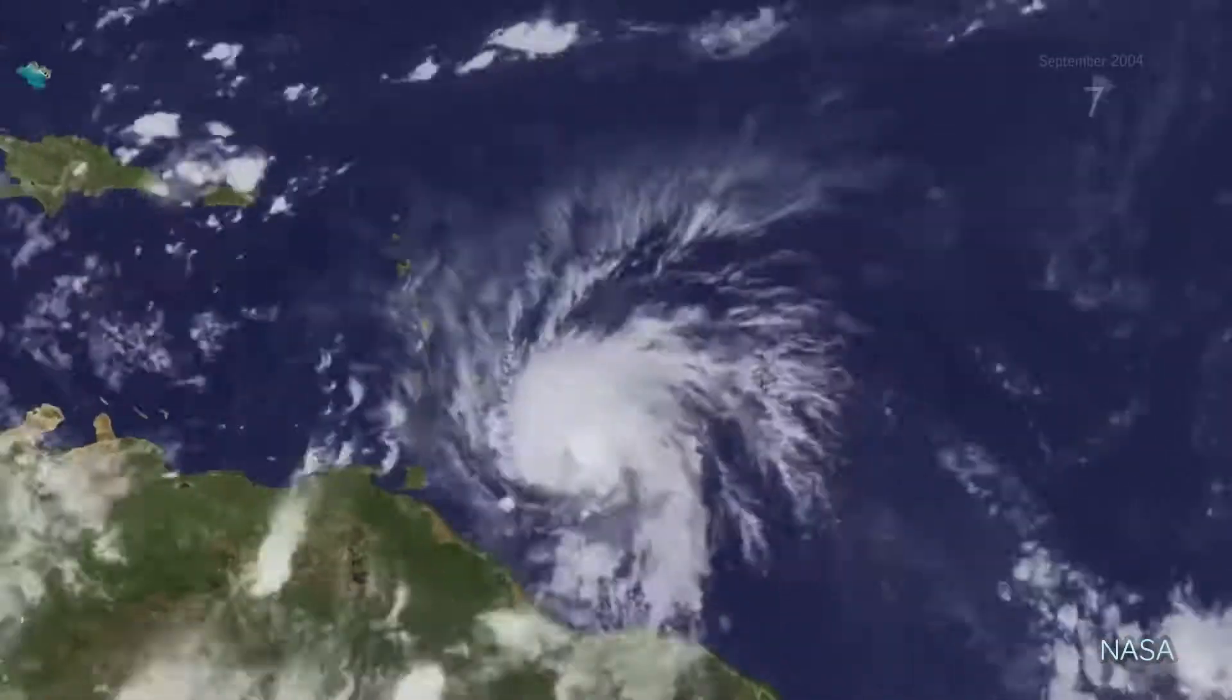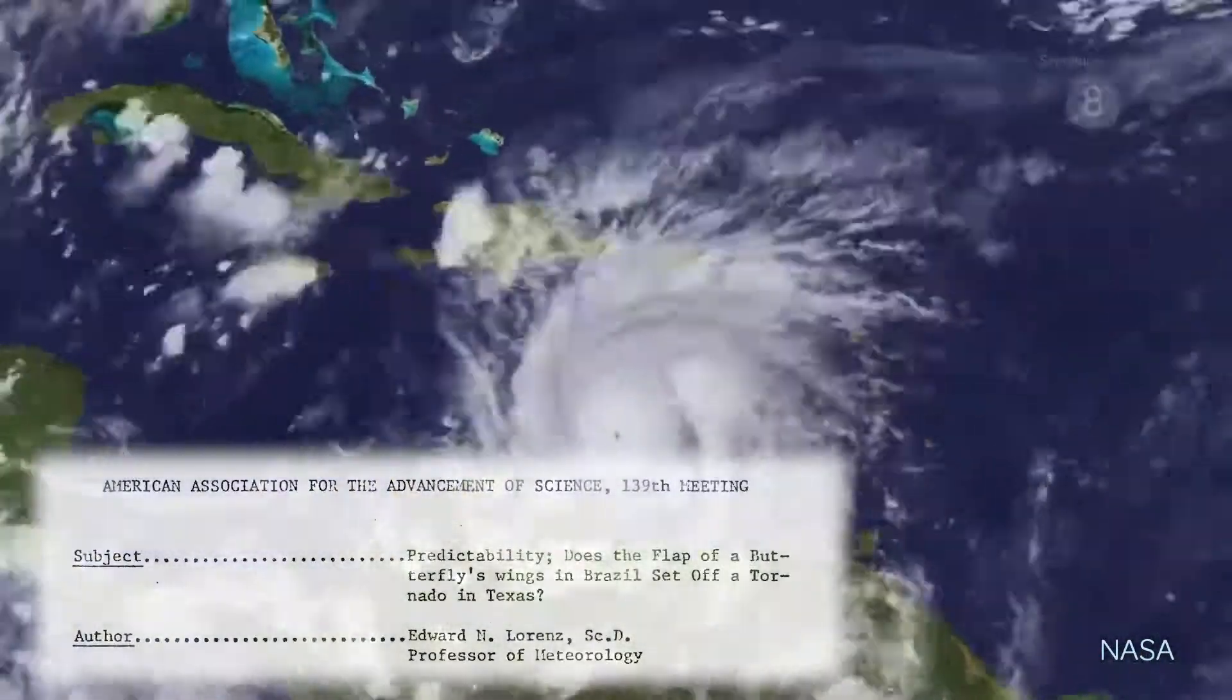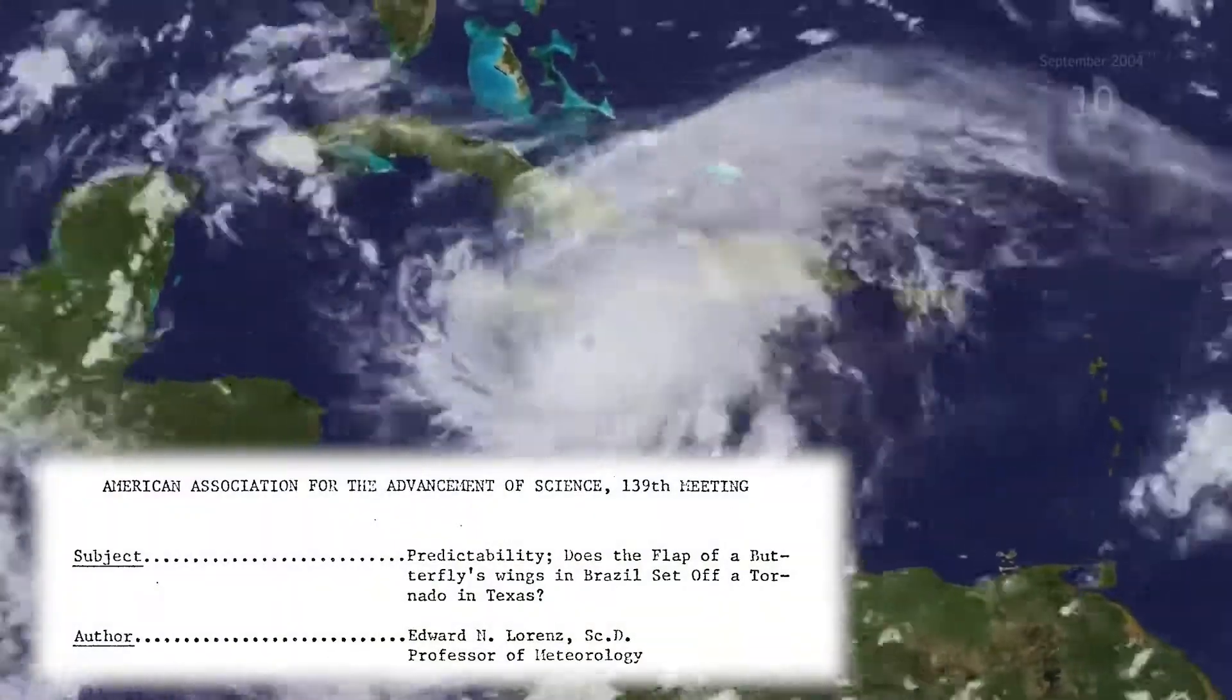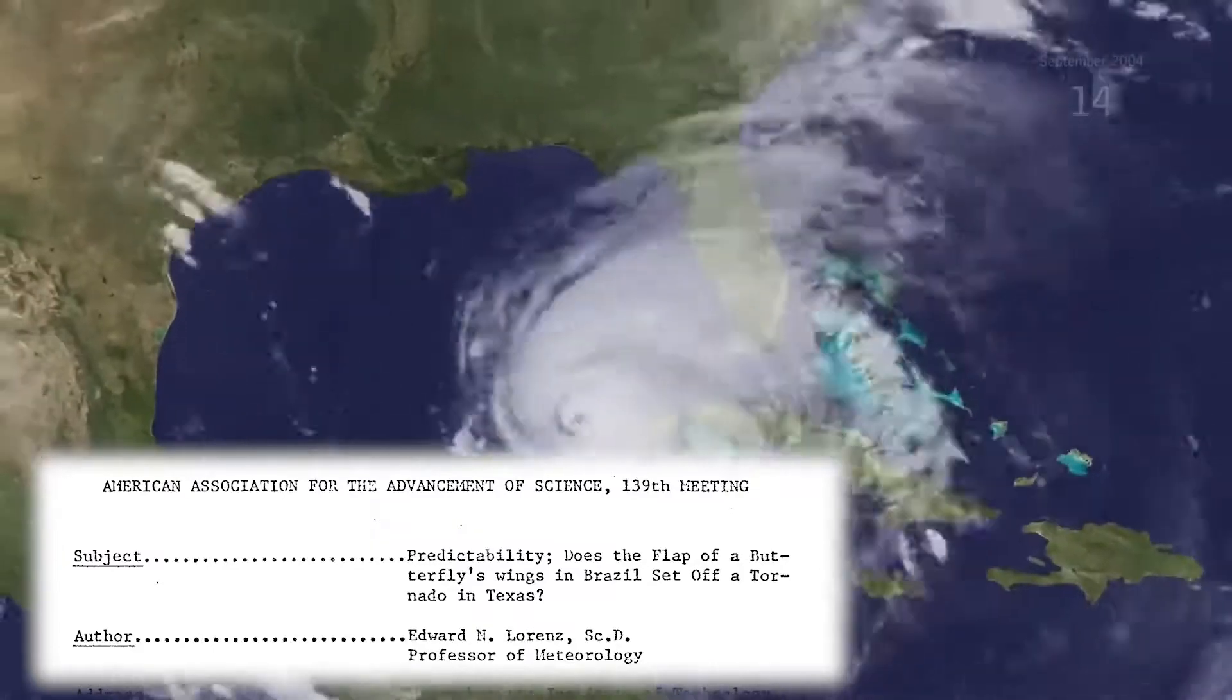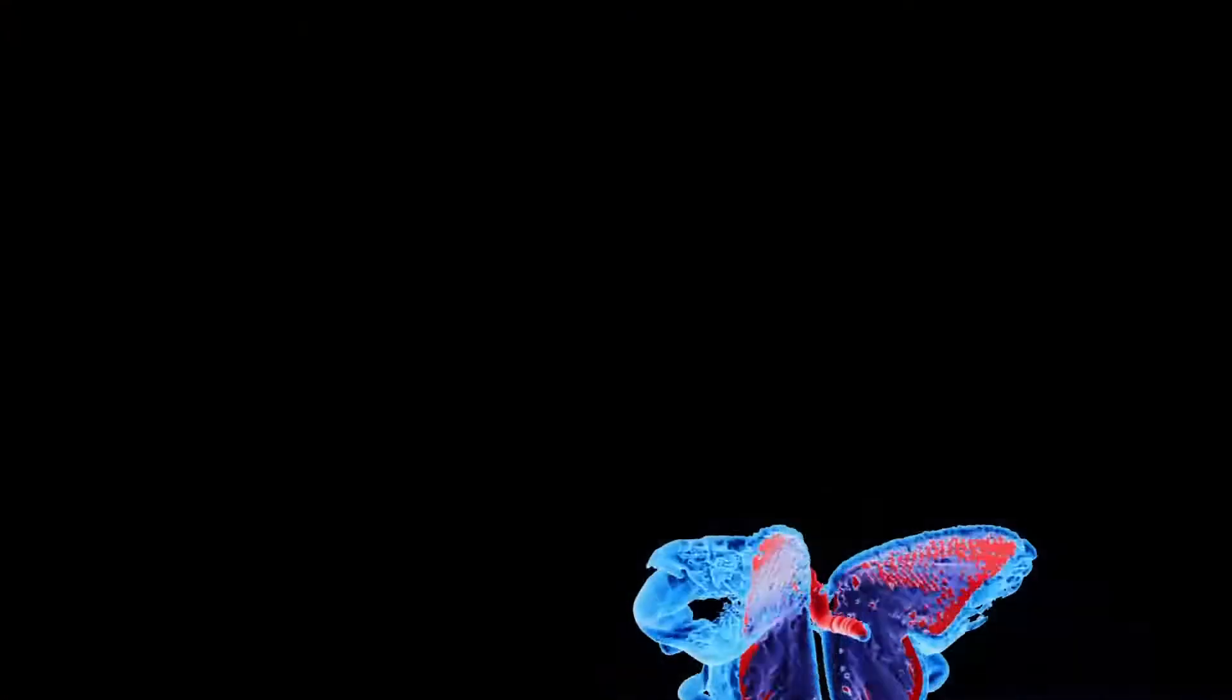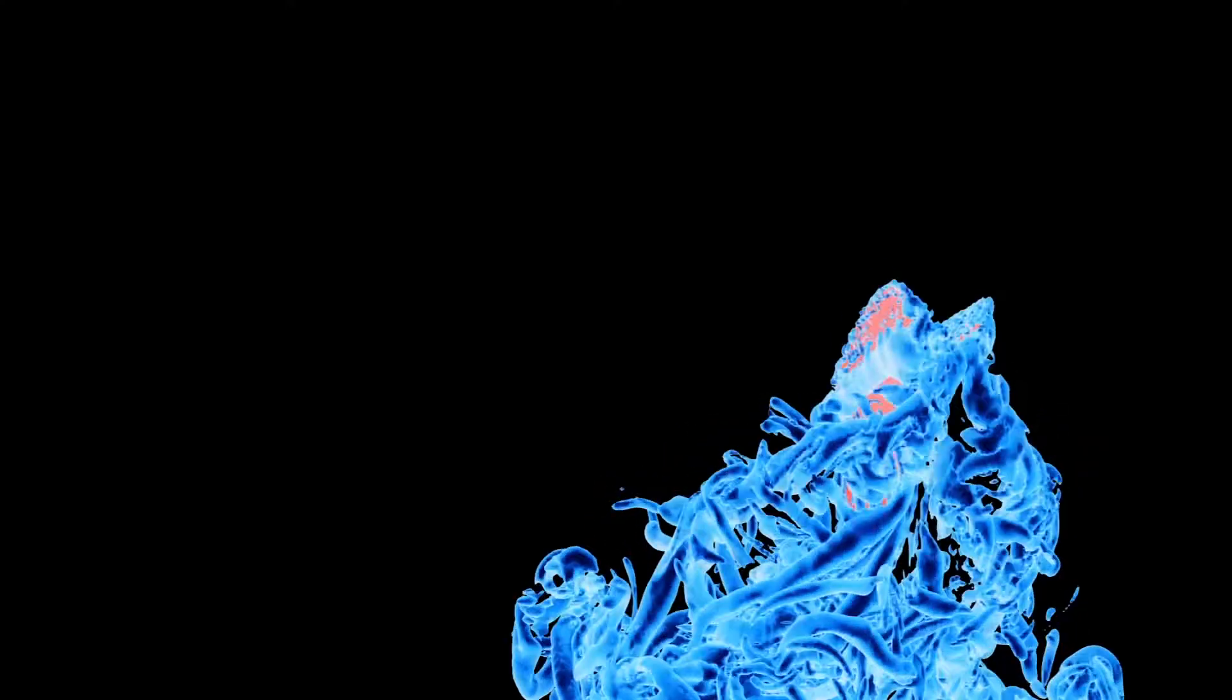When Lorenz presented this work at a conference in 1972, the organizer didn't receive his talk title in time, so he suggested one: Does the flap of a butterfly's wings in Brazil set off a tornado in Texas? So the butterfly, instead of the seagull, became the image most associated with his work.